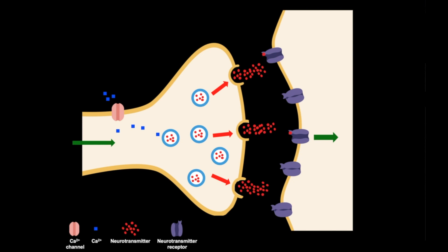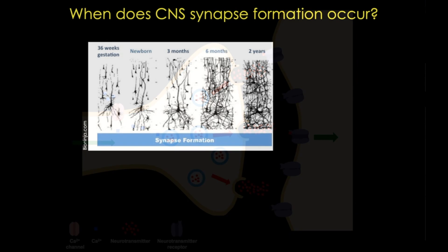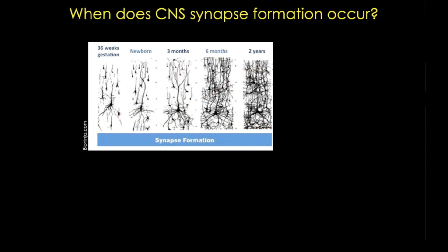Now interestingly, synapse formation isn't a static process. We know that neurons will form multiple synapses to maximize available connections. So as an organism matures, or as a brain matures, or a brain region matures, some synapses are used more frequently, and these connections are consequently strengthened.